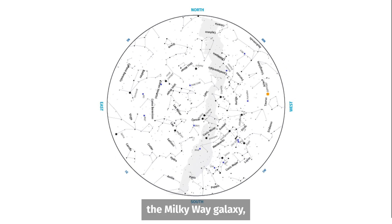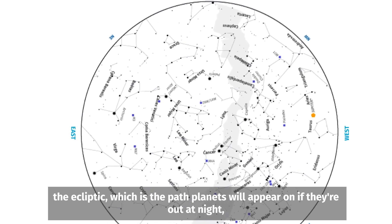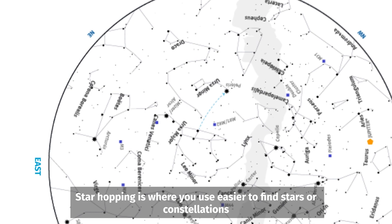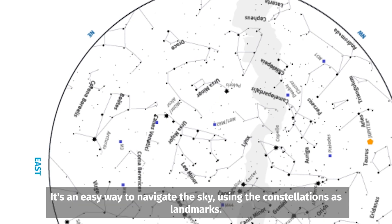Other features on the star map can include the Milky Way galaxy, the ecliptic, which is the path the planets will appear on if they're out at night, and guiding lines to help with star hopping. Star hopping is where you use easier to find stars or constellations to point you to other nearby stars and constellations. It's an easy way to navigate the sky using the constellations as landmarks.